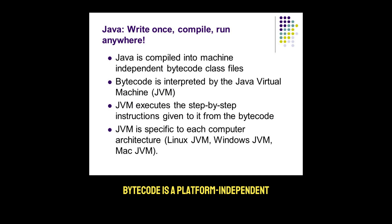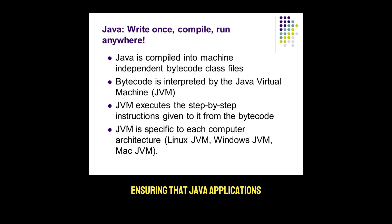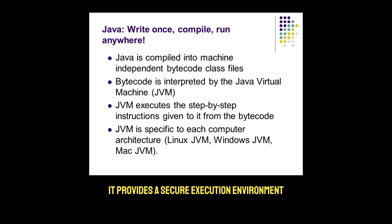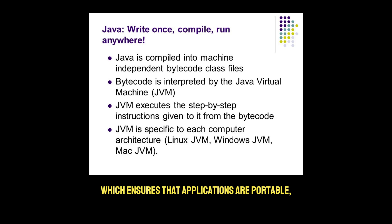Bytecode is a platform-independent, low-level representation of Java code that can be executed on any system with a JVM. The JVM interprets or compiles this bytecode into native machine code, ensuring that Java applications run consistently across different platforms. The JVM also handles memory management, garbage collection, and runtime optimizations like just-in-time compilation, making Java efficient. It provides a secure execution environment by enforcing access control and verifying bytecode before execution. Thanks to bytecode and the JVM, Java abstracts away platform-specific details, ensuring that applications are portable, secure, and efficient across any environment.